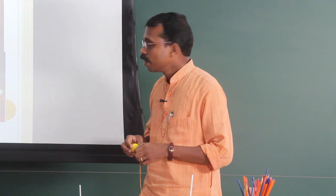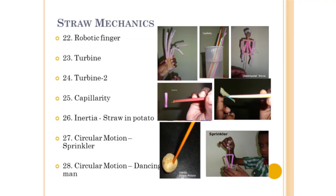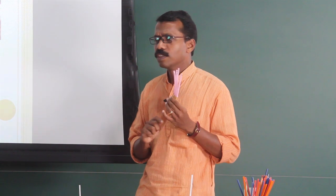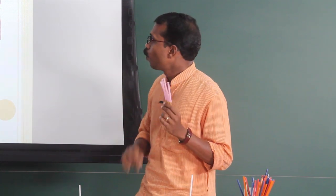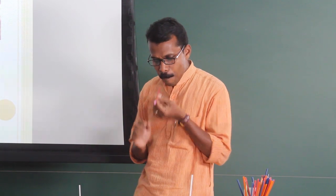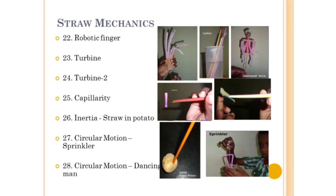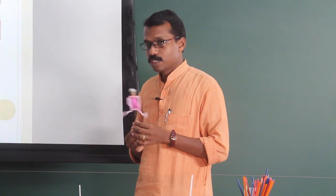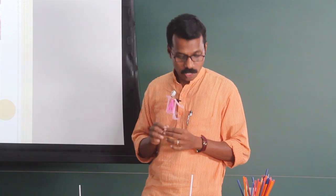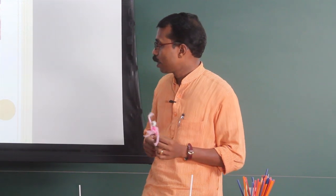Rolling friction reduces and leads to less friction. There is also a robotic finger made with thread and straw that moves. A simple turbine is another experiment. To show inertia, there is a straw inserted into a potato. To show centripetal force, there is a dancing man, and to show the absence of centripetal force, a sprinkler also demonstrates centrifugal force.